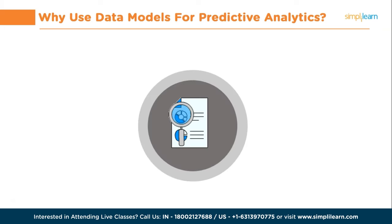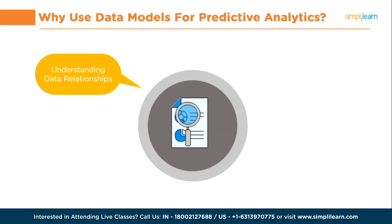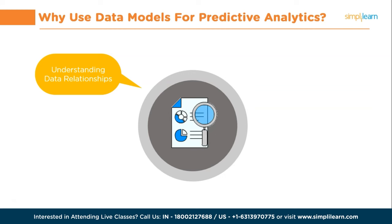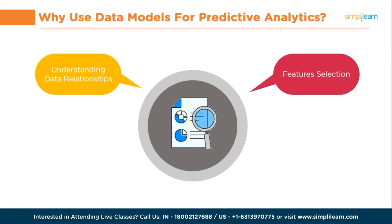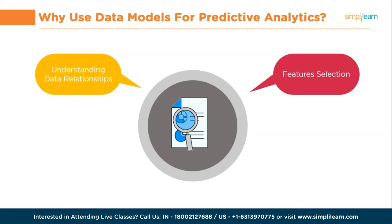Data models are used in predictive analytics for several reasons. First, understanding data relationships: data models help in understanding the relationships between different variables and entities in a dataset. By defining the structure and connections between data elements, models provide a clear representation of how different factors relate to each other — this is crucial for developing accurate predictive models. Second, feature selection: predictive analytics often involves selecting the most relevant features or variables that have a significant impact on the outcome being predicted. Data models help identify these relevant features by analyzing their relationships, dependencies, and correlations with the target variable. This helps eliminate unnecessary or irrelevant features, reducing noise and improving the accuracy of a predictive model.